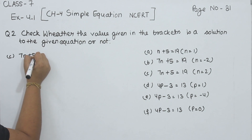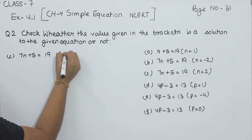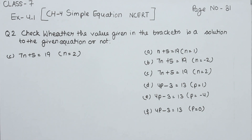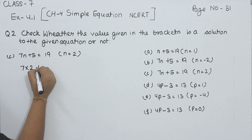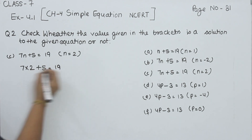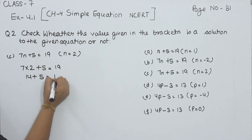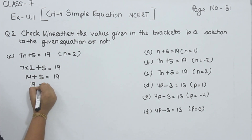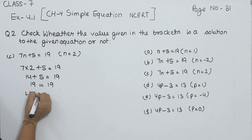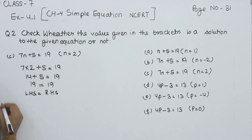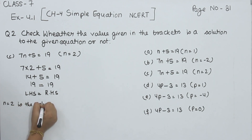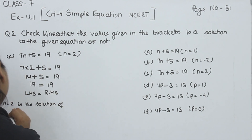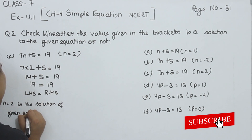Now part C. 7N plus 5 is equal to 19, where N is equal to 2. We are going to solve the equation by taking N as equal to 2. So 7 multiplied by 2 plus 5 is equal to 19. 7 times 2 is 14, and 14 plus 5 is 19. Yes, 19 is equal to 19. Left hand side is equal to right hand side, so N is equal to 2 is the solution of the given equation.